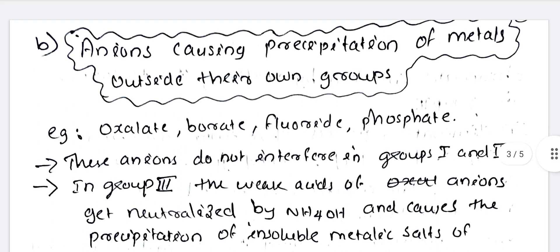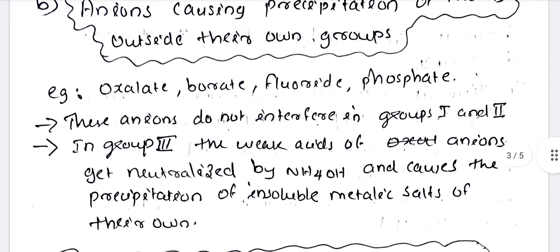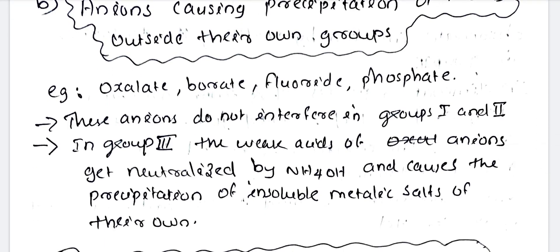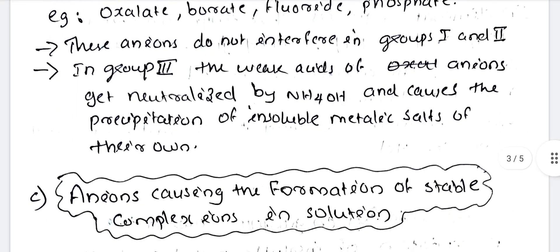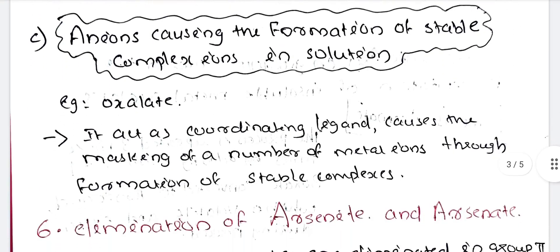The second category is anions causing precipitation of metals outside their own group. Examples are oxalate, borate, fluoride, and phosphate. These anions do not interfere in groups 1 and 2, but in group 3, the weak acids of these anions get neutralized by NH4OH, which causes precipitation of insoluble metallic salts. The third category is anions causing formation of stable complex ion solutions. An example is oxalate, which acts as a coordinating ligand and causes the masking of metal ions through formation of stable complexes.